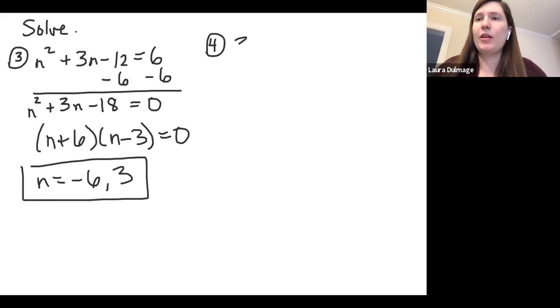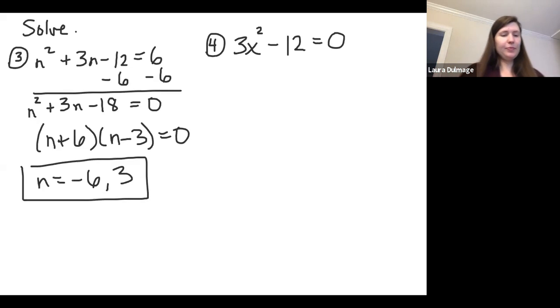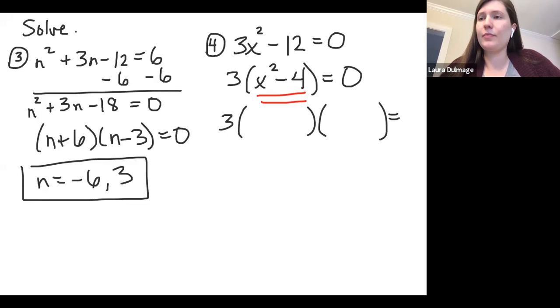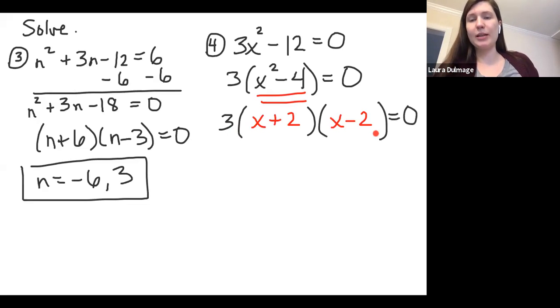Number four: 3x² - 12 = 0. All right, our first step always with factoring is to factor out a GCF if possible, and we also want to make sure that we're equal to zero, which we are. So we have a GCF here of 3. Our other problems did not have a GCF because our first term was just the variable squared. We recognize here that we're left with a difference of squares. And so our difference of squares will factor into (x + 2)(x - 2).